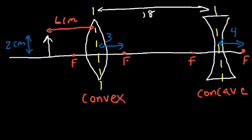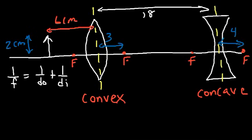Determine where the image produced by the convex lens is going to form, and where the image produced by the divergent lens is going to be located. Also determine if that image is upright, inverted, real, virtual, enlarged, or reduced. Let's start by using the thin lens equation. For a convex lens, the focal length is positive. For a concave lens, or a divergent lens, the focal length is negative.